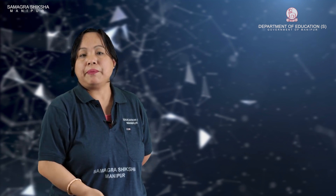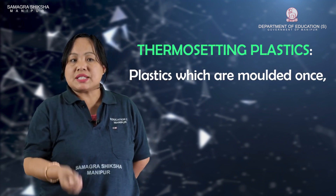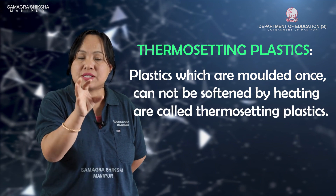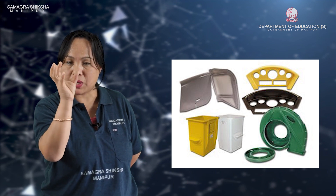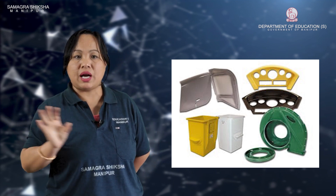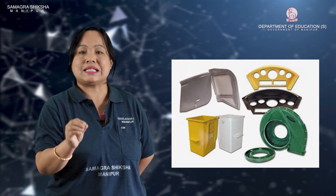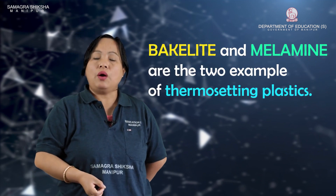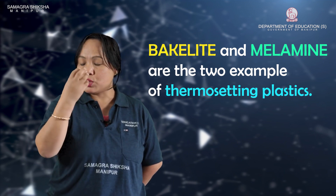The next type is thermosetting plastic. Plastic which is molded once cannot be softened by heating. Bakelite and melamine are the two examples of thermosetting plastic.